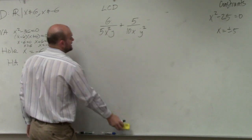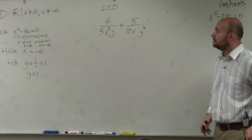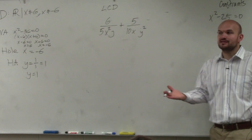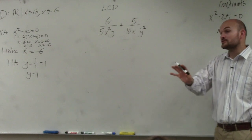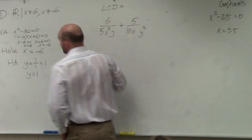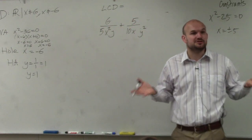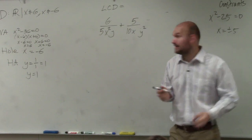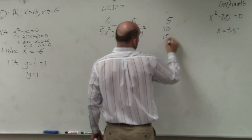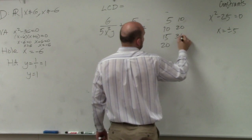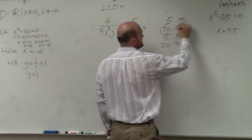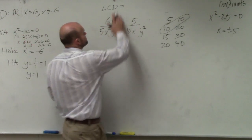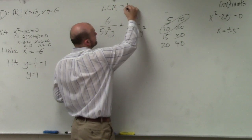In this example, we need to choose an expression that 5x²y and 10xy² both divide into. The best thing to do is break it down. Instead of looking at the whole expression, let's look at the numbers: 5 and 10. The smallest number that 5 and 10 both evenly divide into is 10. List the multiples and you'll see that 10 is the smallest common multiple of both 5 and 10.